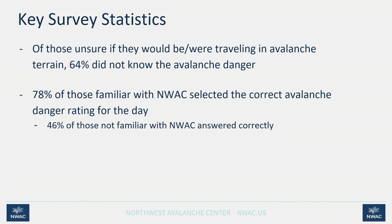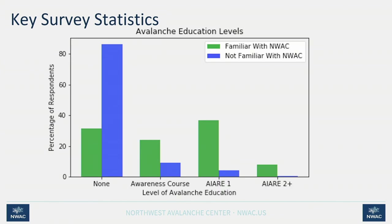Of those unsure if they'd be traveling in avalanche terrain, 64% didn't know the avalanche danger — with 'unsure' meaning they may not know how to recognize avalanche terrain or need to evaluate conditions first. This year we'll use a new survey to break that down further. A key measure of success: 78% of those familiar with NWAC knew the correct avalanche danger for the day, versus only 46% of those not familiar with NWAC. We also see that those familiar with the avalanche center trend toward more avalanche education.